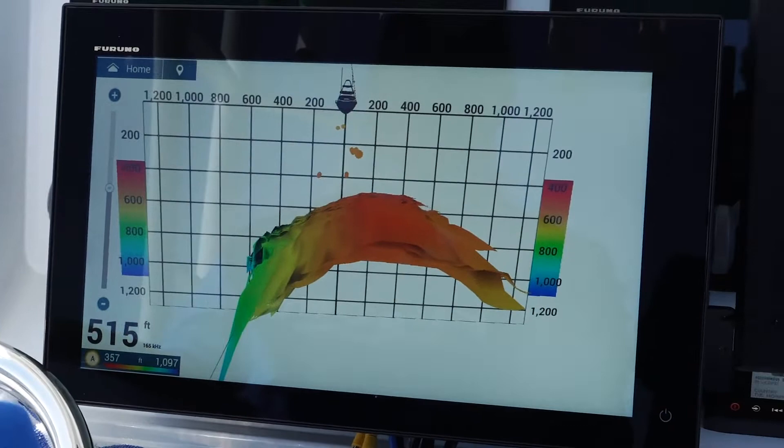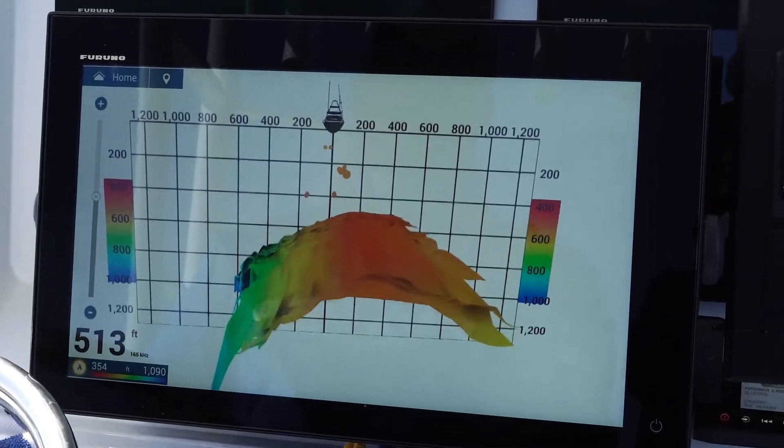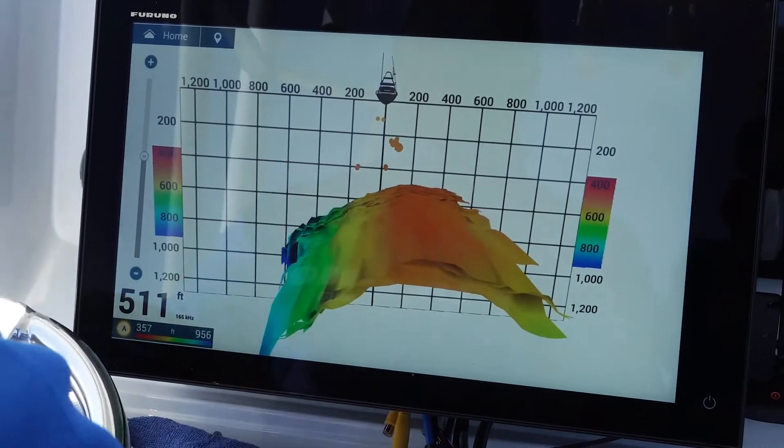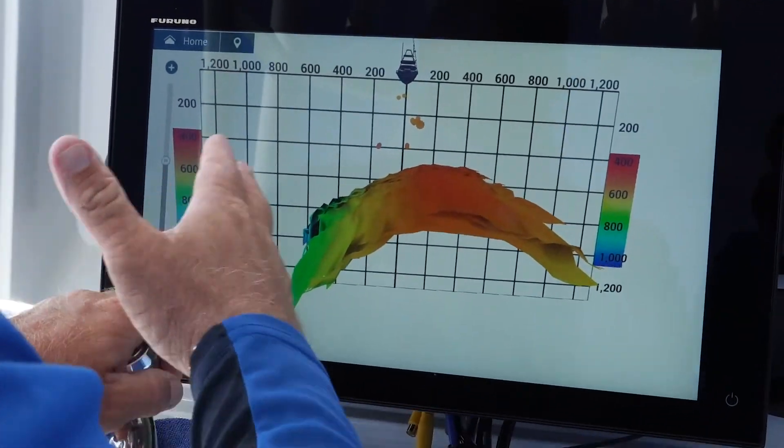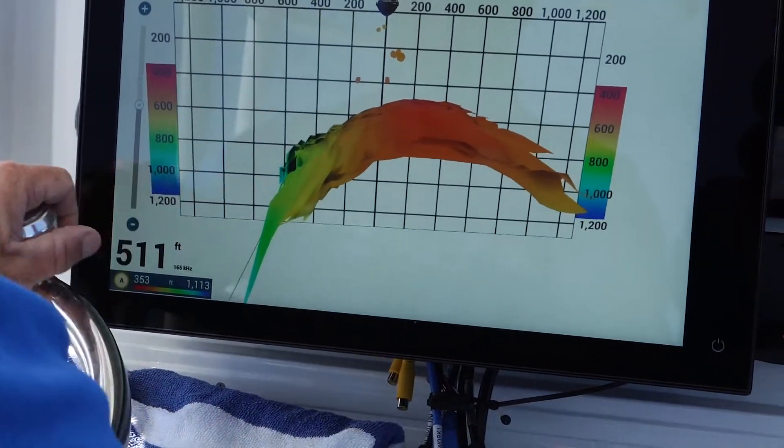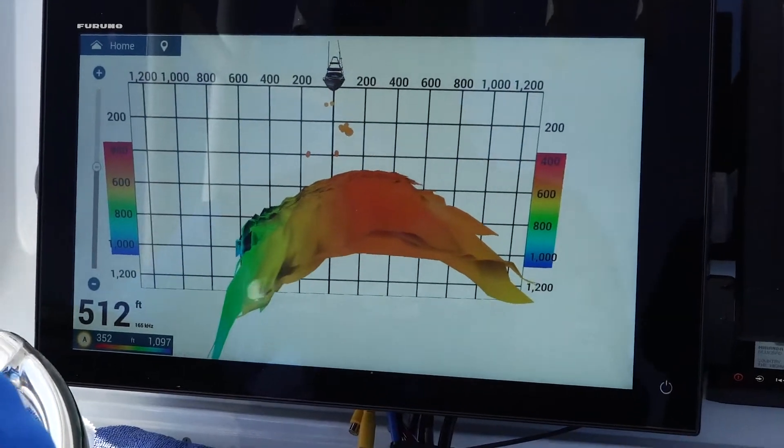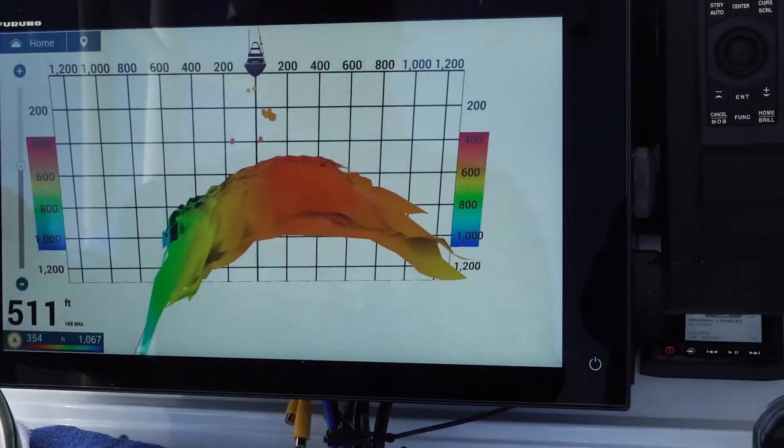When I see it on my one-dimensional, you don't really know where they are, but you know they're there. This right here will definitely dial you in whether they're on the left side, the right side of the boat, port or starboard. This is a great image of the Marathon hump.